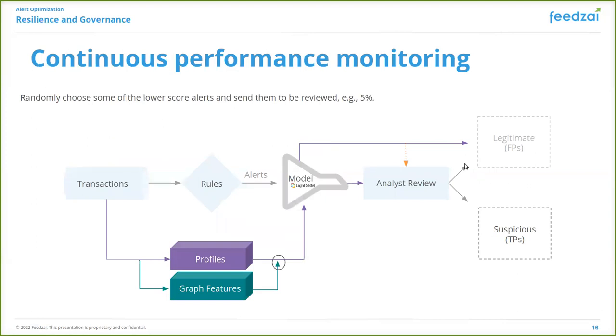Towards building a resilient model, we propose a continuous performance monitoring strategy that provides the ability to choose some of the low scores and send them to be reviewed in order to make sure that we are aware of any performance degradation.